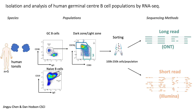In our experimental design, we used human tonsils from five donors and isolated both naive B cells and germinal center B cell populations using their specific markers — CXCR4 for dark zone and CD83 for light zone. We sorted them in certain numbers of cells per population, then isolated their RNA and used the same RNA samples for nanopore long-read sequencing and Illumina short-read sequencing.